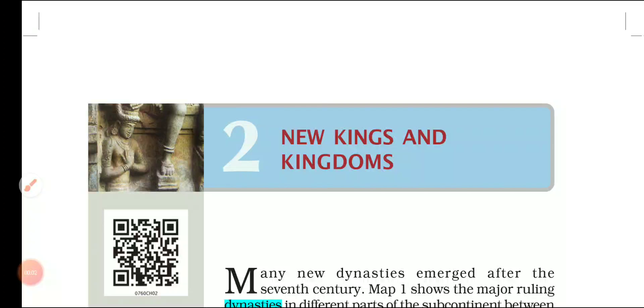Hi friends, welcome back. We will discuss Chapter 2 of Class 7 NCERT History today. The title of the chapter is New Kings and Kingdoms.